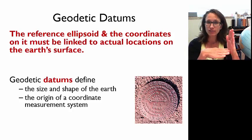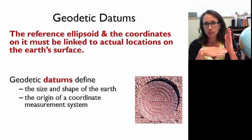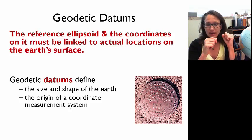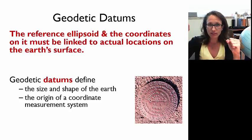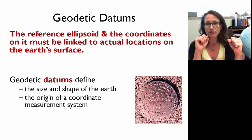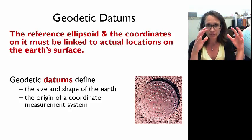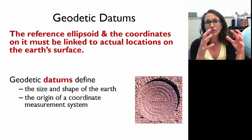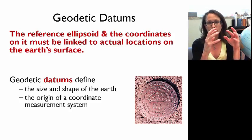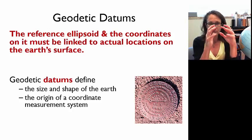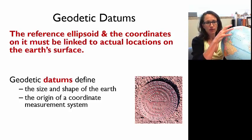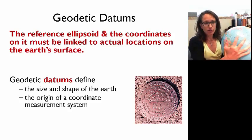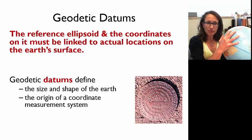If you think of a Cartesian plot, an XY grid, the origin is the zero-zero point. If you know that zero-zero point, you can identify other points on that grid or graph. So a datum helps us pin our grid system to the Earth. Think of the lines of longitude — the graticule — like a little cage around the Earth. We could move the lines of latitude and longitude around the Earth, but the datum locks those lines to the Earth.